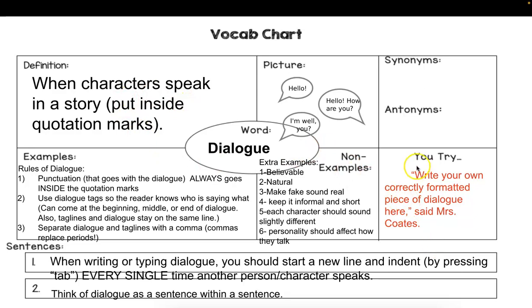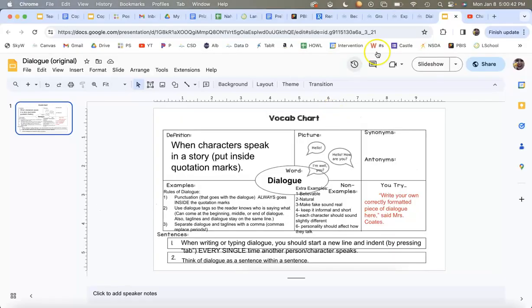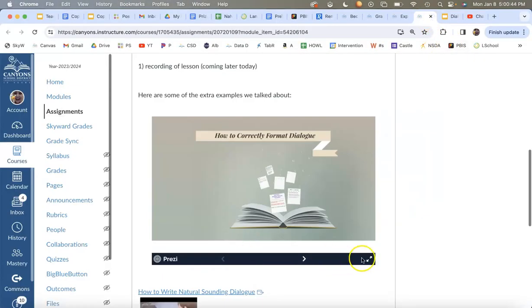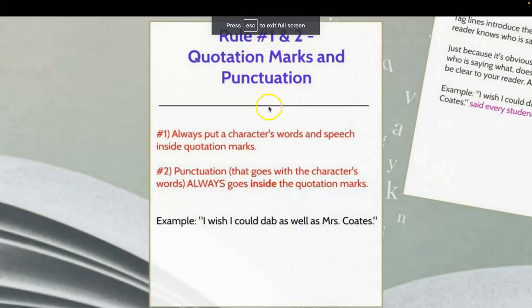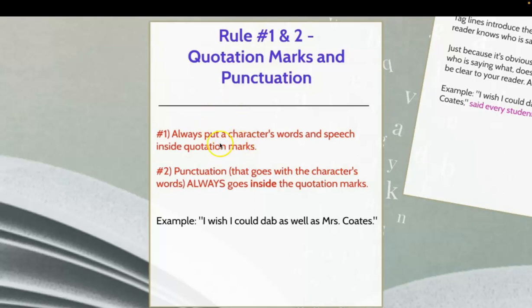That's the most basic thing — most kids who get to my class can at least do that. But there's a lot of other information, and this project is a lot of points, so make sure you're paying close attention. There are a couple of rules of dialogue. The first rule: always put the character's words — what they're saying out loud — in quotation marks. If it's not something they're saying out loud, it doesn't have to go in quotation marks.